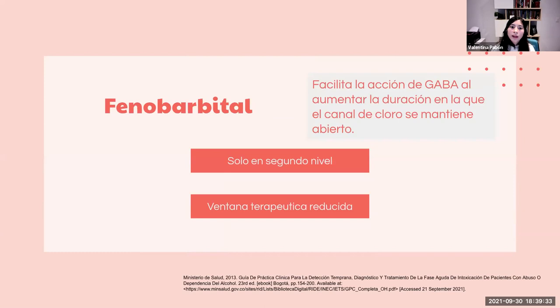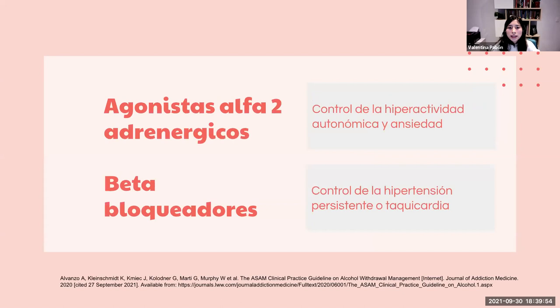Los anticonvulsivantes actúan así: la carbamazepina inhibe canales de sodio; el gabapentín inhibe la subunidad alfa-2-delta de los canales de calcio; el ácido valproico aumenta la inactivación de canales de sodio e incrementa la concentración de GABA al inhibir la GABA-transaminasa. El fenobarbital es un barbitúrico que facilita la acción del GABA aumentando la duración de apertura del canal de cloro, solo en segundo nivel y con ventana terapéutica muy reducida. Los agonistas alfa-2 adrenérgicos controlan la hiperactividad autonómica y la ansiedad; los beta bloqueadores controlan la hipertensión persistente o taquicardia, pero no como manejo del síndrome de abstinencia en sí, sino para síntomas no controlados con benzodiazepinas.